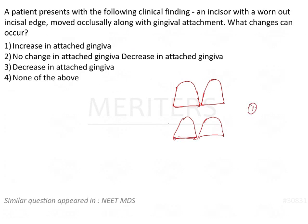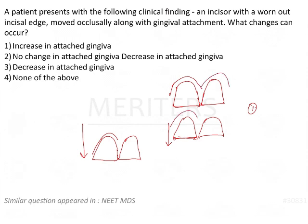The clinical crown length decreased. However, what has happened now is the tooth has moved occlusally — it has undergone passive eruption. So what it has done is tried to re-establish the initial clinical crown length. It moved occlusally, and due to passive eruption, the gingiva moved along with it.